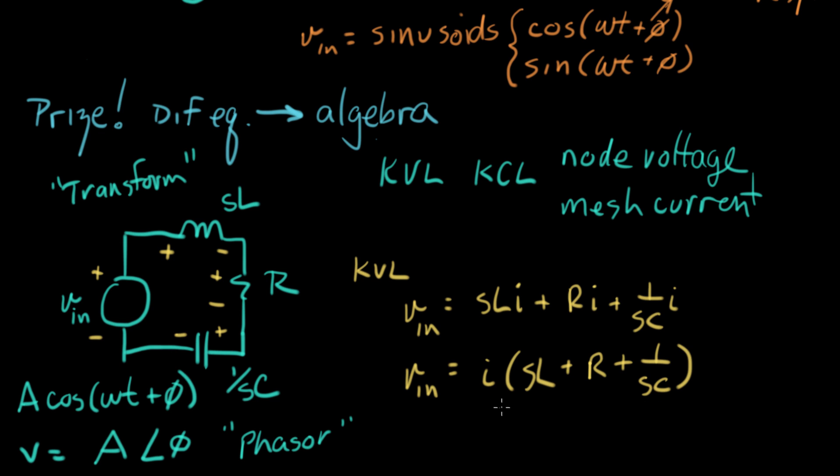Now, if we look at this expression here, look at this right here. This is the characteristic equation. We just wrote down the characteristic equation. We just wrote down the characteristic equation of this circuit using these transformed components.